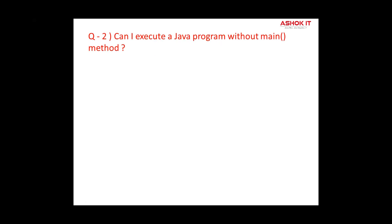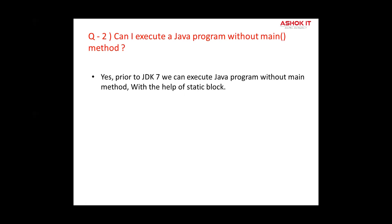Question two: Can I execute a Java program without a main method? Yes. Prior to JDK 7, we could execute a program without a main method with the help of a static block, because JVM loads the class, executes static blocks, and then looks for the main method. If the main method is not found, it throws an exception. But after JDK 7, it is compulsory to add a main method in your program.